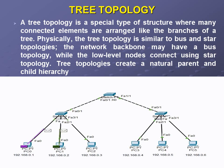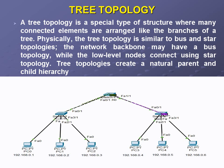Tree topology is a special type of structure where many connected elements are arranged like branches of a tree. Physically, tree topology is similar to bus and star topology combined — the network backbone may have a bus topology while the lower-level nodes are connected using star topology. Tree topology creates a natural parent-and-child hierarchy, which is an important characteristic of this topology type.